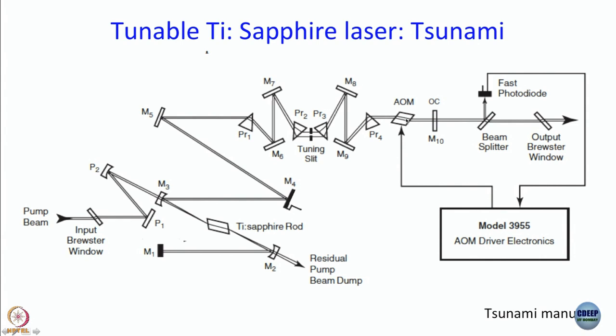There is also an acousto-optic modulator (AOM) in the path — we will come back to that. After the AOM, the beam goes to the output coupler. There is a beam splitter and a fast photodiode downstream of the output coupler — we will explain what those do.